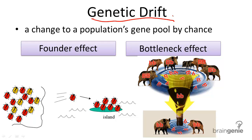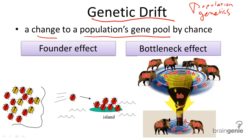To study evolutionary mechanisms, it is important to investigate population genetics. Population genetics is the study of genes within populations. Genetic drift is the random change in frequency of alleles, or a population's gene pool, just by chance.